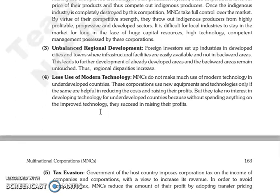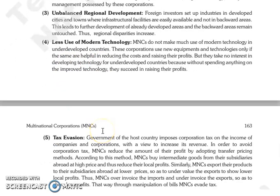Then less use of modern technology. MNCs apna jo latest modern technology hai, usse kabhi bhi underdeveloped countries mein apply nahi karte. Kyunki jo underdeveloped country ke liye new technology hai, woh MNC ke liye outdated technology hoti hai. Toh ye jo corporations hain, woh use of new equipment aur technologies tab karte hain jab unhe help milti hai in reducing the cost aur raising their profits. Lekin unhe koi interest nahi in developing technology for underdeveloped countries.